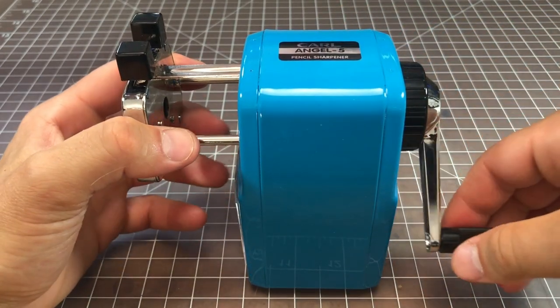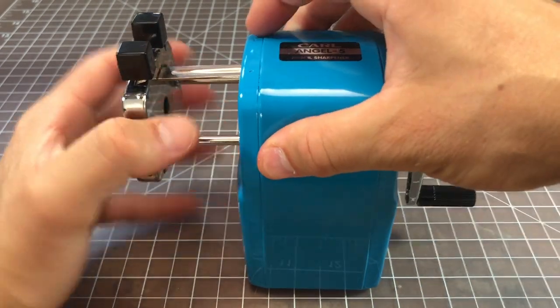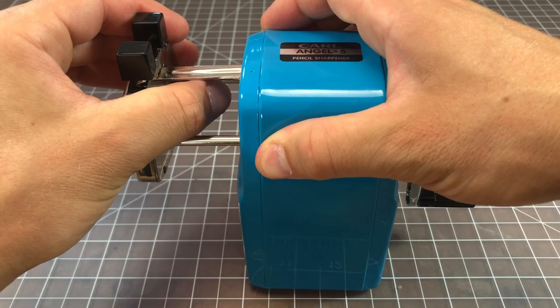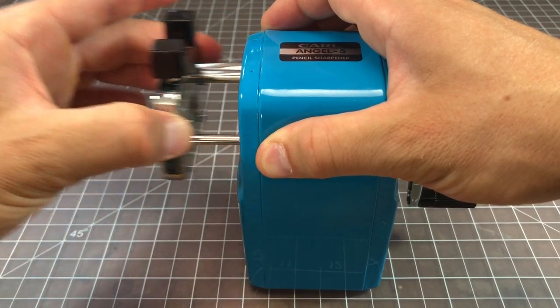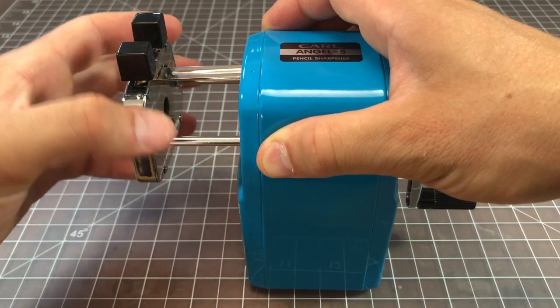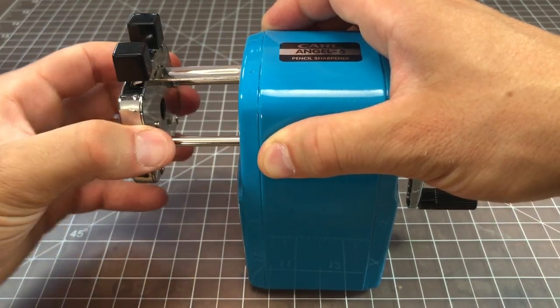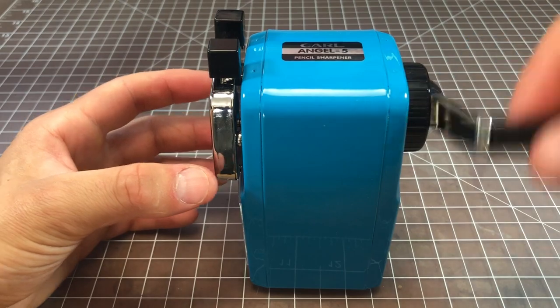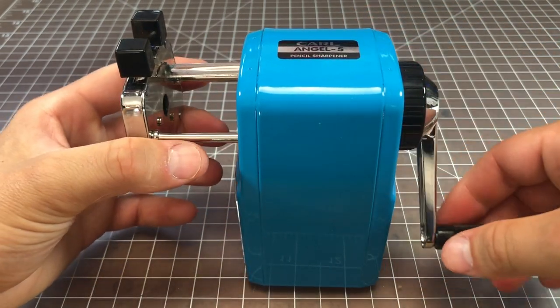When you turn it, this little piece gets pushed up and this springs in. It falls down when you pull out and it locks. You could push it like this, but you don't have to because when you turn it and hit the top point or near the top point, it gets triggered.